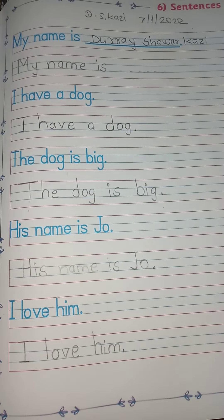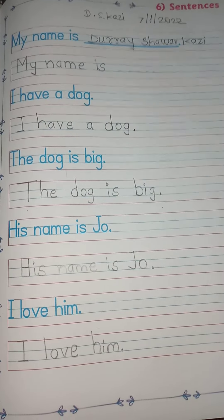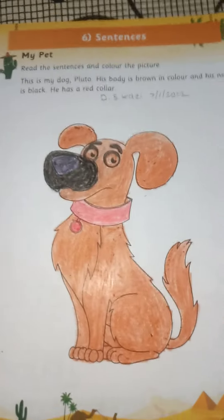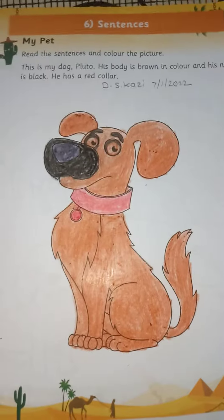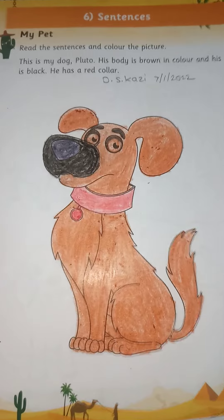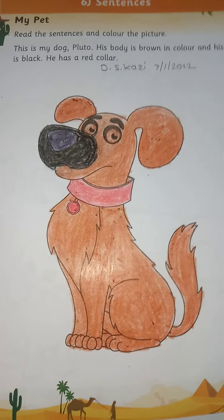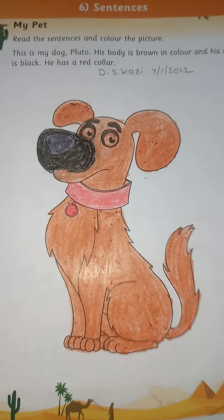Now open your activity book part 2. Page number 13 mein jo sentence diya hai — the activity is 'My Pet'. My pet matlab mera paaltu.